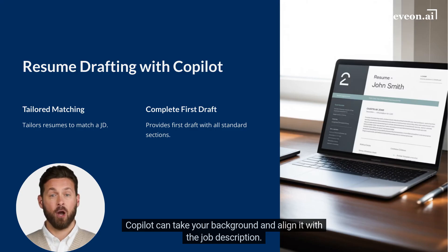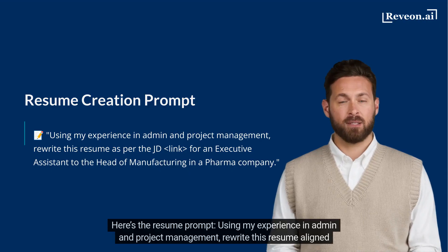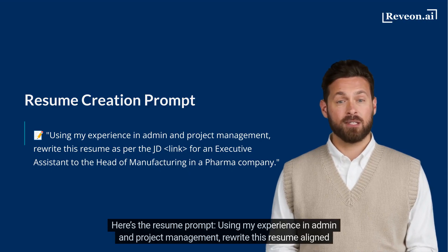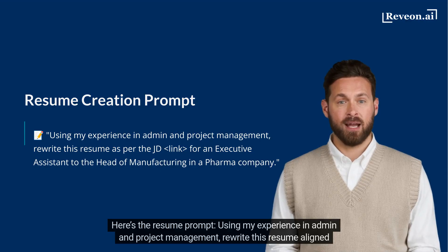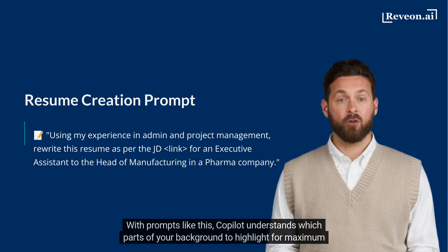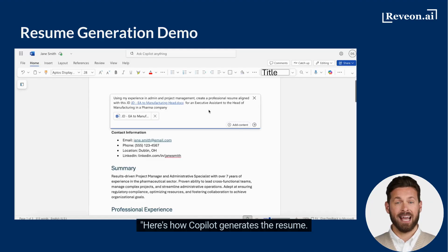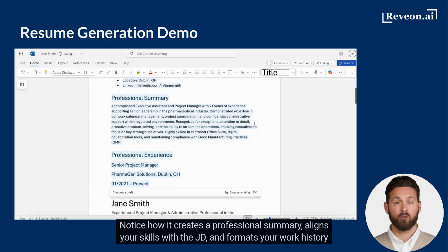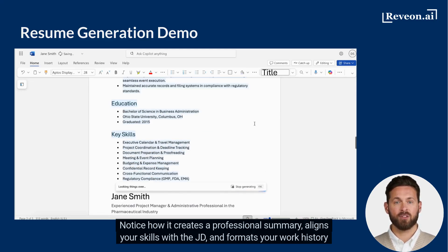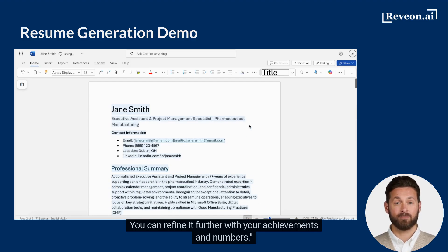Now let's talk about resumes. Copilot can take your background and align it with the job description. It drafts a professional resume that's structured and targeted for the role you're applying to. Here's the resume prompt: Using my experience in admin and project management, rewrite this resume aligned with the JD. With prompts like this, Copilot understands which parts of your background to highlight for maximum relevance. Notice how it creates a professional summary, aligns your skills with the JD, and formats your work history neatly. You can refine it further with your achievements and numbers.